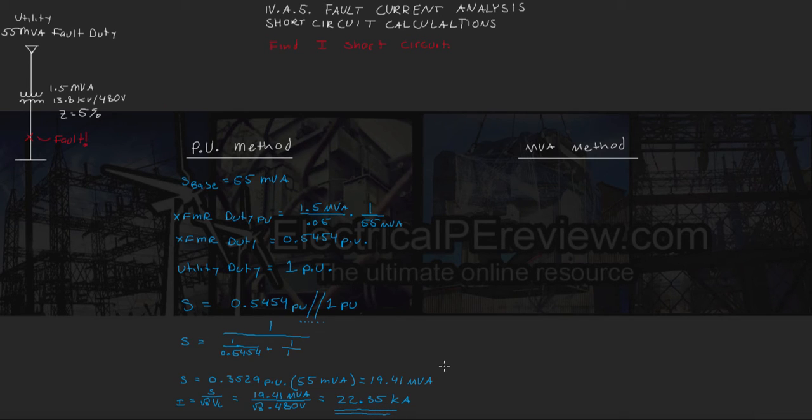Now, if we want to do it the more intuitive way, we can check our work. Without using per units and base values, we're going to find our total transformer let-through power, or our transformer duty,